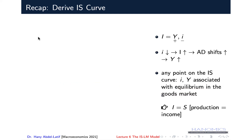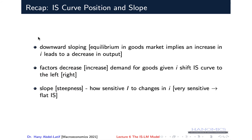All points on the IS curve are equilibrium points in the goods market where investment equals savings, or production equals income. The IS is a downward sloping curve, meaning equilibrium in the goods market implies an increase in the interest rate will lead to a decrease in output — an inverse relationship.